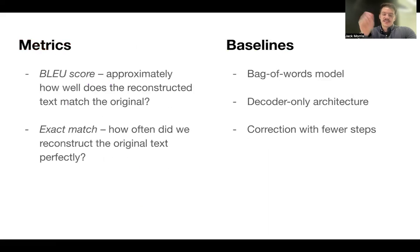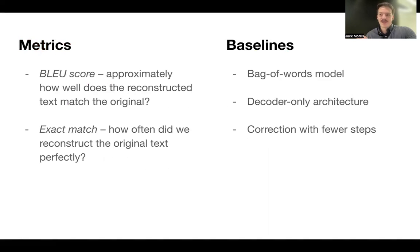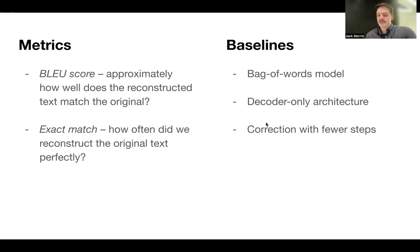For experiments, our main metrics are BLEU score — a similarity measure between strings from 0 to 100 — and exact match. We started with BLEU score and then realized we were getting sequences back exactly a good amount of the time and added exact match. Baselines include a bag-of-words model, decoder-only architectures from prior work, and our own correction model run for fewer steps. Unless specified, vec2text uses 50 steps.